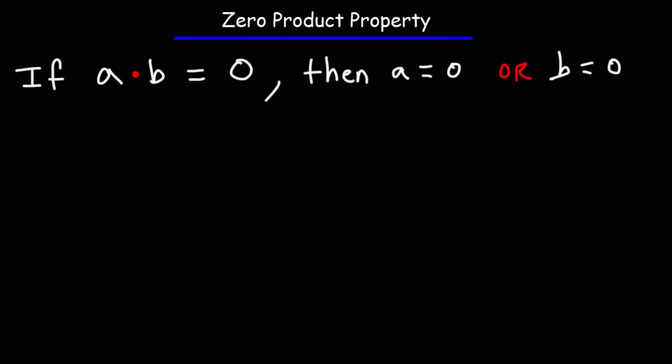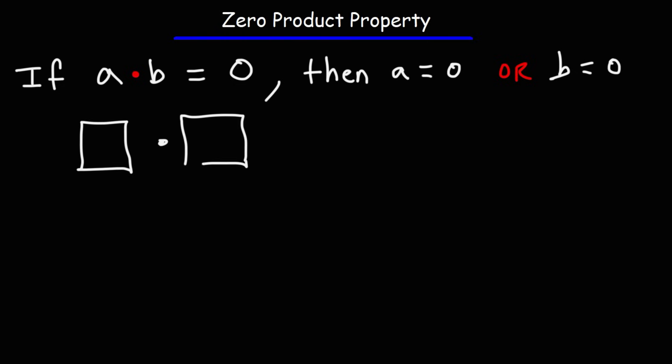In this lesson we're going to focus on the zero product property. The basic idea is: if you're multiplying two numbers a and b, and a times b equals zero, then either a or b must be zero, because zero times anything is zero. If we have two numbers that multiply to zero, the only way this could happen is if one of those numbers is zero.